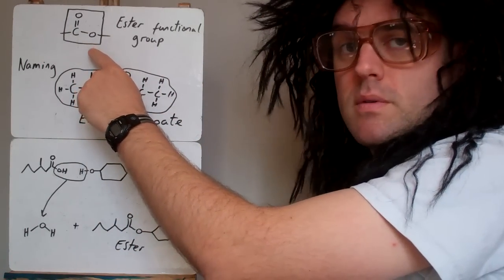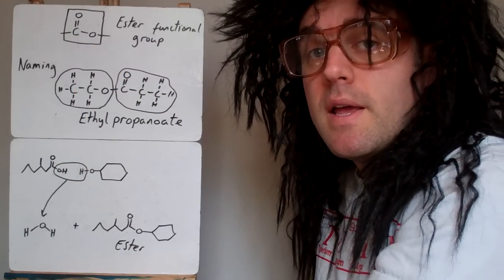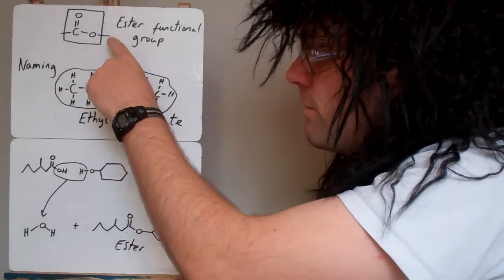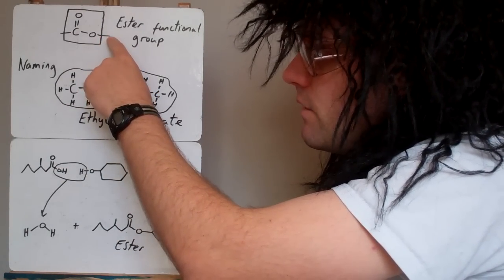That's the ester functional group to look out for. You might have to spot it in a question, so don't confuse it with a ketone or a carboxylic acid. Carboxylic acid will have a hydrogen here and an ester doesn't—it has another carbon.